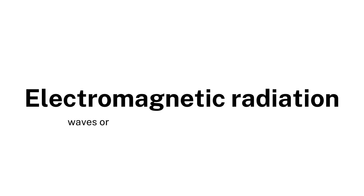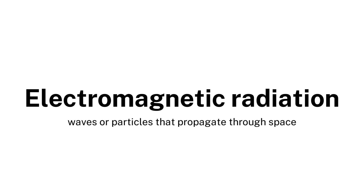Electromagnetic radiation refers to waves or particles that propagate through space, including phenomena like light and radio waves. Let's explore examples to see how electromagnetic radiation is present in our daily experiences.